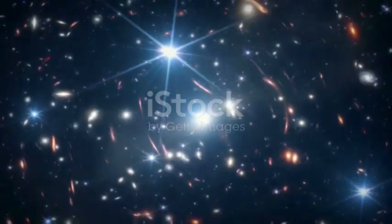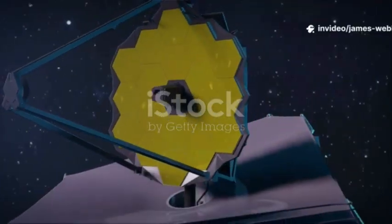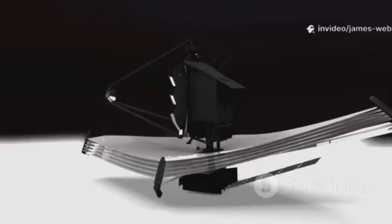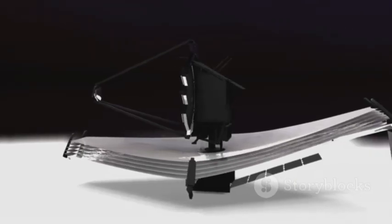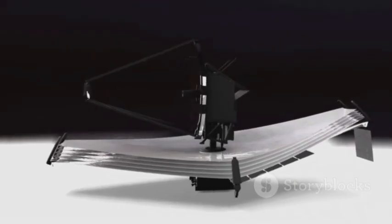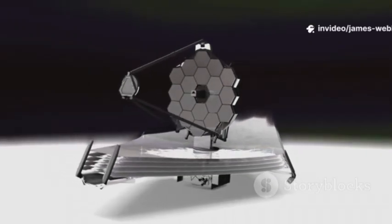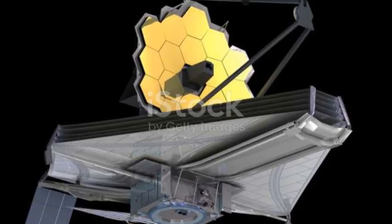JWST has the most powerful infrared instruments ever sent to space. Positioned a million miles from Earth, shielded from the sun's glare, its massive golden mirror and state-of-the-art sensors are designed for one primary purpose: to see the unseen. In the cold, dark expanse of space, objects like distant comets and asteroids are incredibly faint. They don't generate their own light. They only reflect the dim light of faraway stars. To capture this whisper of light, you need a telescope of unprecedented sensitivity.